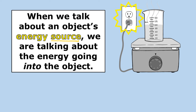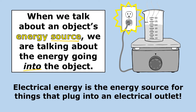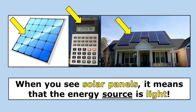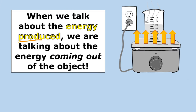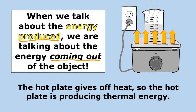When we talk about an object's energy source, we are talking about the energy going into the object. Electrical energy is the energy source for things that plug into an electrical outlet. When you see solar panels, the energy source is light — those solar panels are absorbing light energy so it can be used to do other things. When we talk about the energy produced, we are talking about the energy coming out of the object. The hot plate gives off heat, so it is producing thermal energy. Electricity is going into the hot plate, so electrical energy is the energy source, but heat is coming out — so thermal energy is the energy produced.